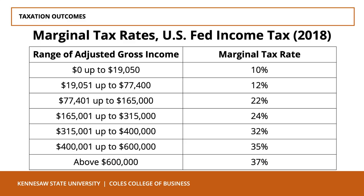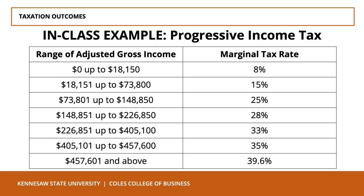Every dollar earned up to $19,050 is taxed at a marginal rate of 10%. Every dollar after $19,050 and up to $77,400 is taxed at 12%, and so on. How much tax revenue would be collected from an individual earning $100,000 a year? The total would equal $18,150 times 0.08, plus the difference between $73,800 and $18,150 multiplied by 0.15, plus the difference between $100,000 and $73,800 multiplied by 0.25 — giving a total of $16,349.50.